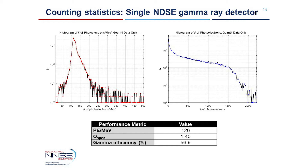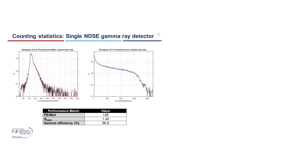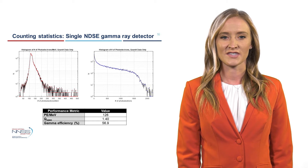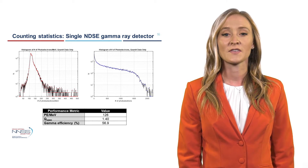The results of the gamma ray and photoelectron statistics performance of a single NDSC gamma ray detector are provided here. On the left is the histogram of number of photoelectrons per MeV created, which yielded a mean of 126 photoelectrons per MeV. On the right is the histogram of the number of photoelectrons created. This data was used to calculate Q-spec, which was equal to 1.40. The closer to a value of 1 that Q-spec is, the lower the uncertainty in the detector response to the fission gamma ray die-off distribution. The intrinsic gamma ray efficiency of a single NDSC gamma ray detector is 56.9%, which is reasonable for a plastic scintillator-based detector.